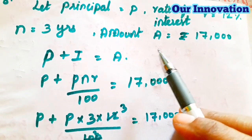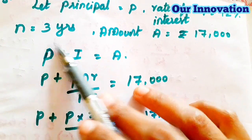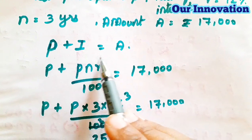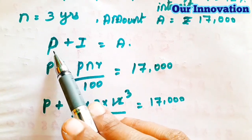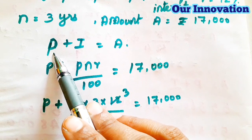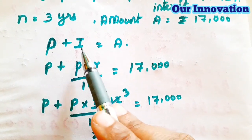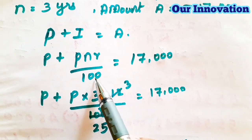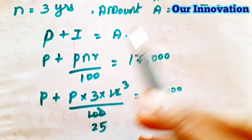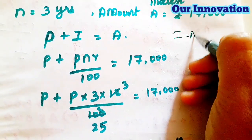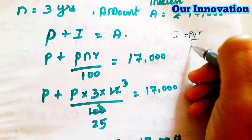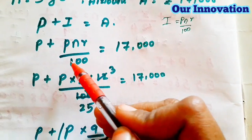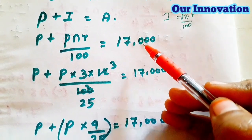The amount is what we pay at the end of 3 years, which is ₹17,000. Using P + I = A, and since P is unknown we keep it as P. The formula for I is PNR/100, so I = PNR/100.